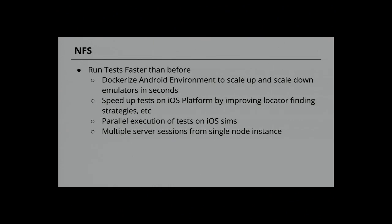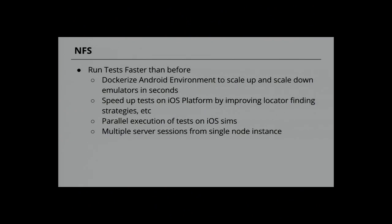Speed up your tests on iOS platform — to boot up the iOS simulator takes at least 2–3 minutes, whereas the entire automation suite needs to run in less than 2 minutes. Speed up tests on iOS by improving locator finder strategies: use iOS predicates or UI Automator locators rather than XPath. Spin up multiple server instances in one APM node server. Dockerize the Android environment to scale emulators up and down in seconds.